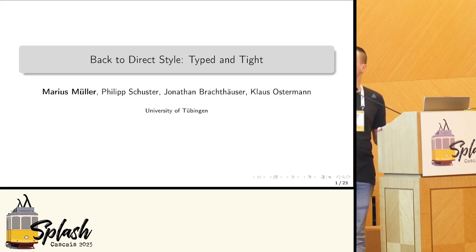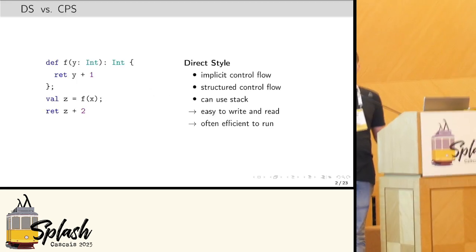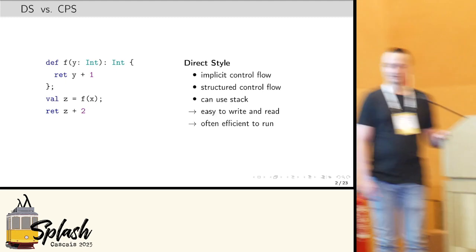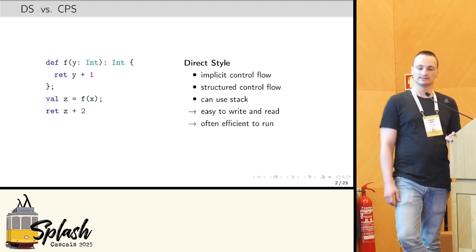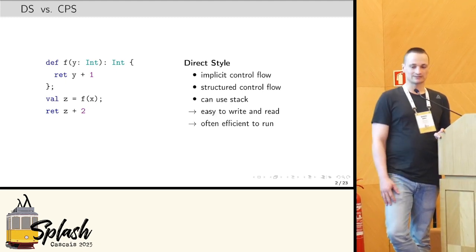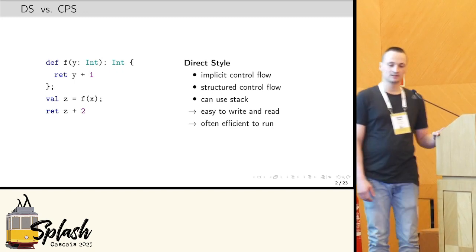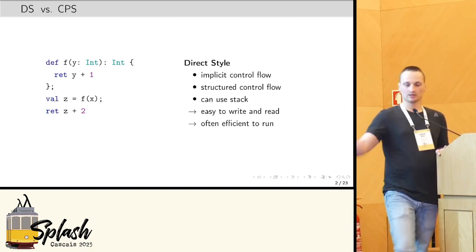So in the beginning, I first want to recap some key properties that are relevant here. So first, direct style. In direct style, control flow is implicit and structured. As you can see, there's a very simple program on the left. We define a function here, and when we call the function, control flow is transferred to the function, and as soon as the function is done, it's returned back to the call site.